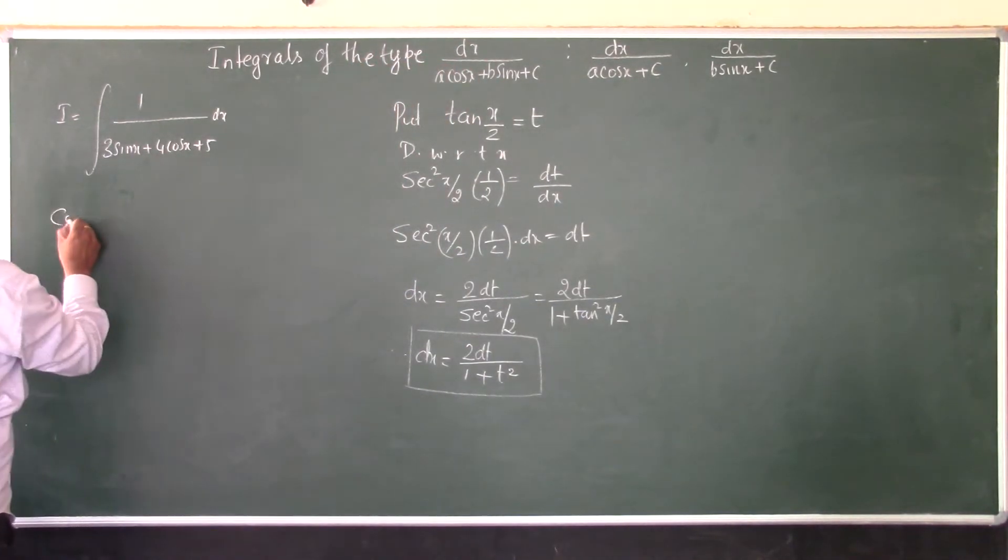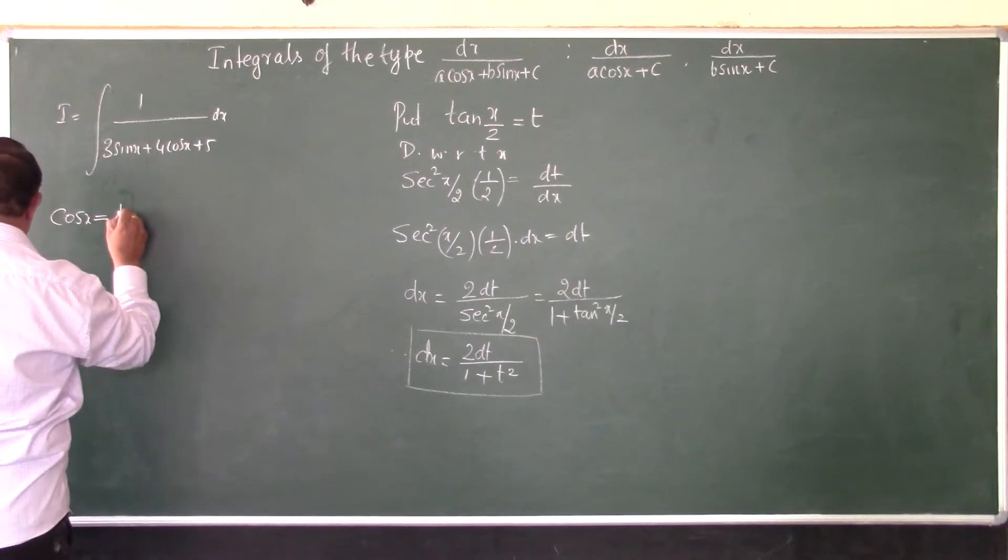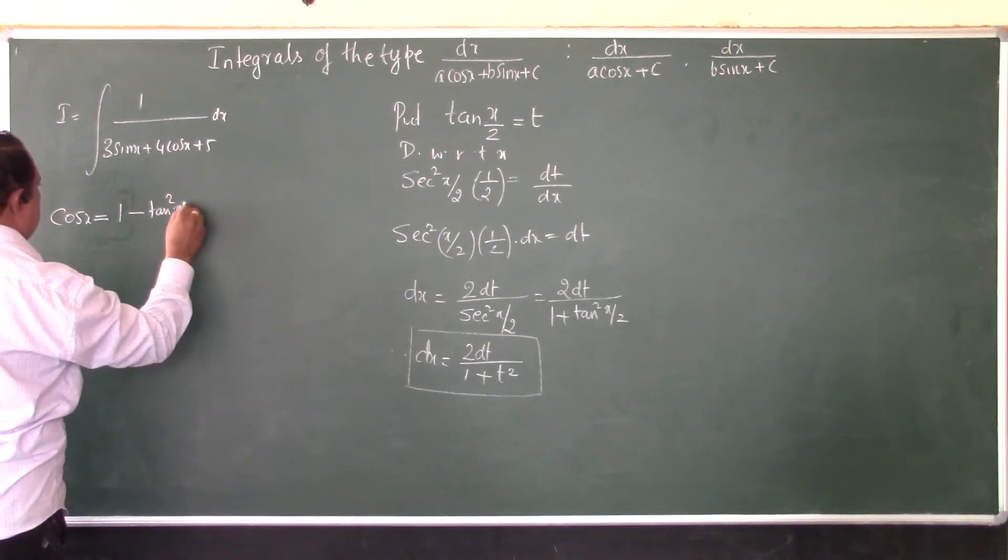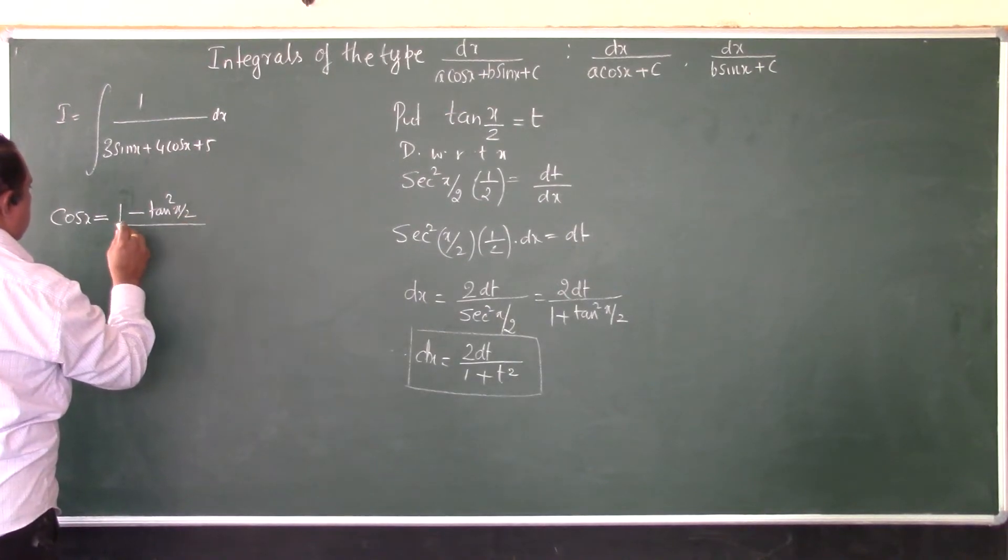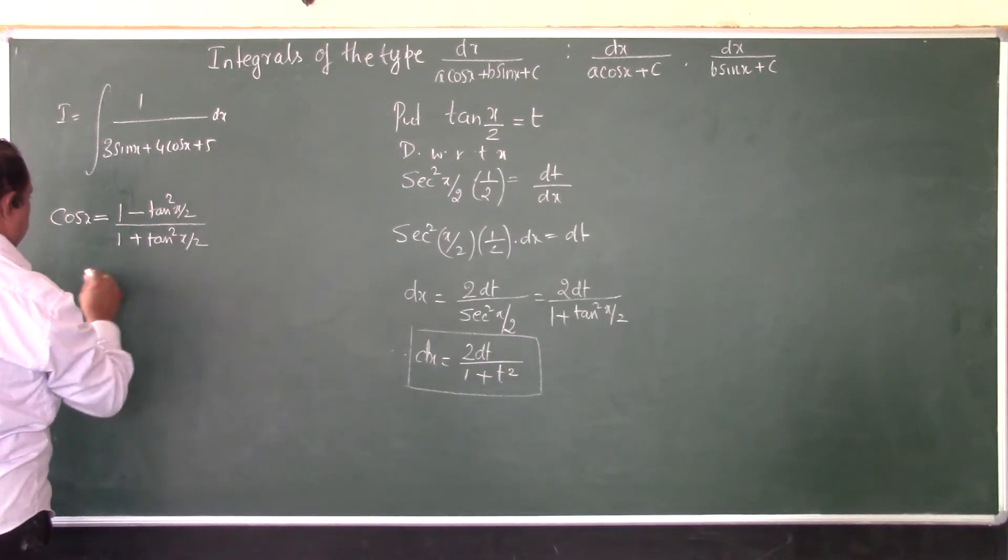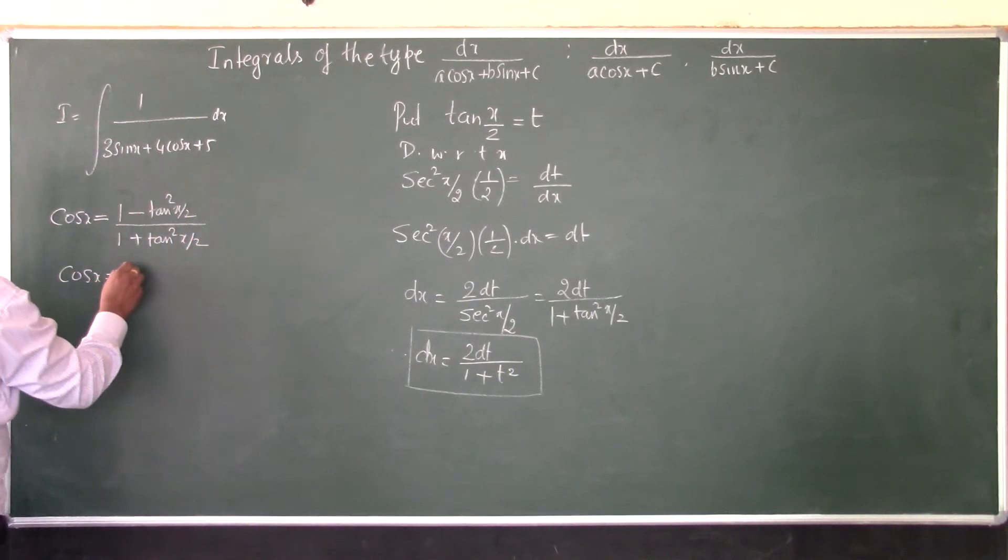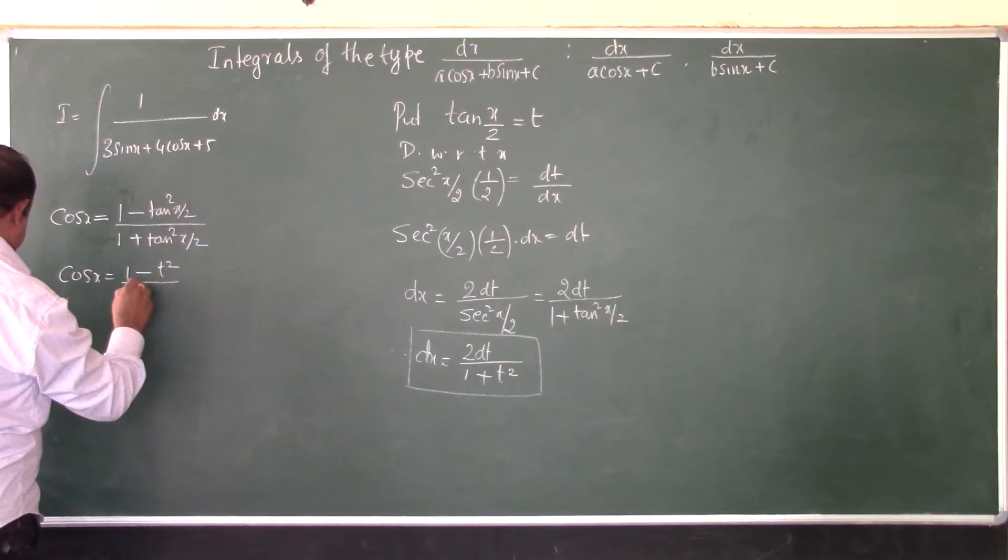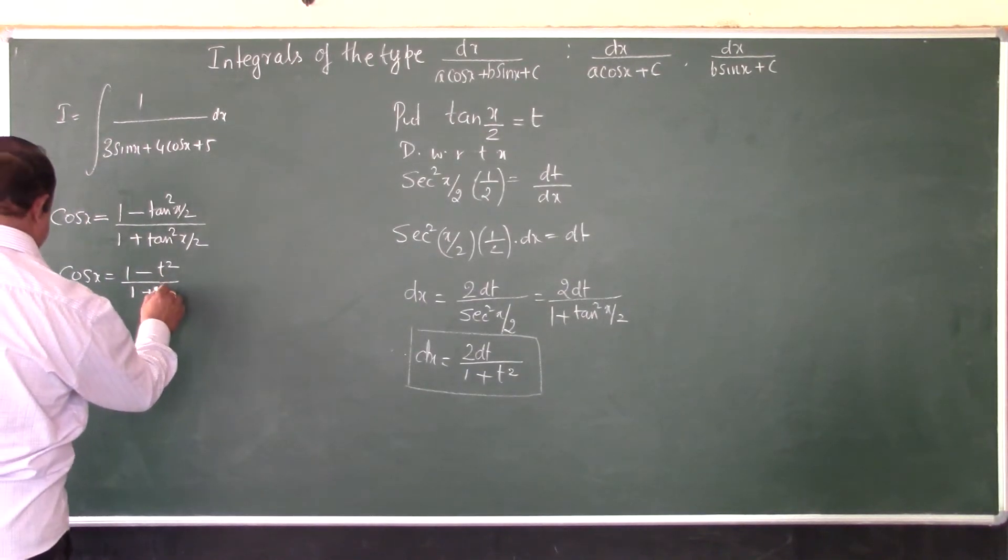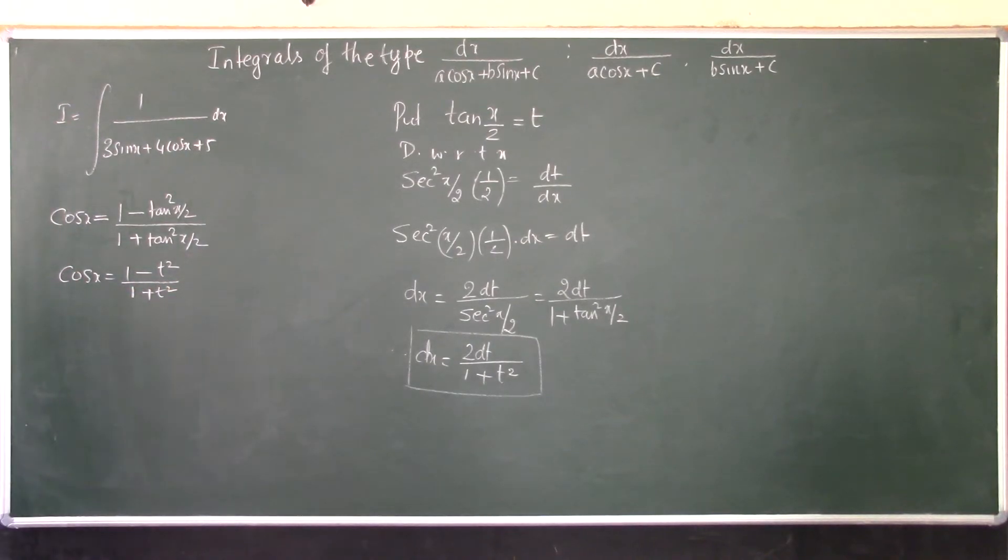Further, we have cos x and sin x terms. We know that cos x equals (1 - tan²(x/2))/(1 + tan²(x/2)). So according to this, cos x becomes (1 - t²)/(1 + t²). So cos x should be replaced by (1 - t²)/(1 + t²).